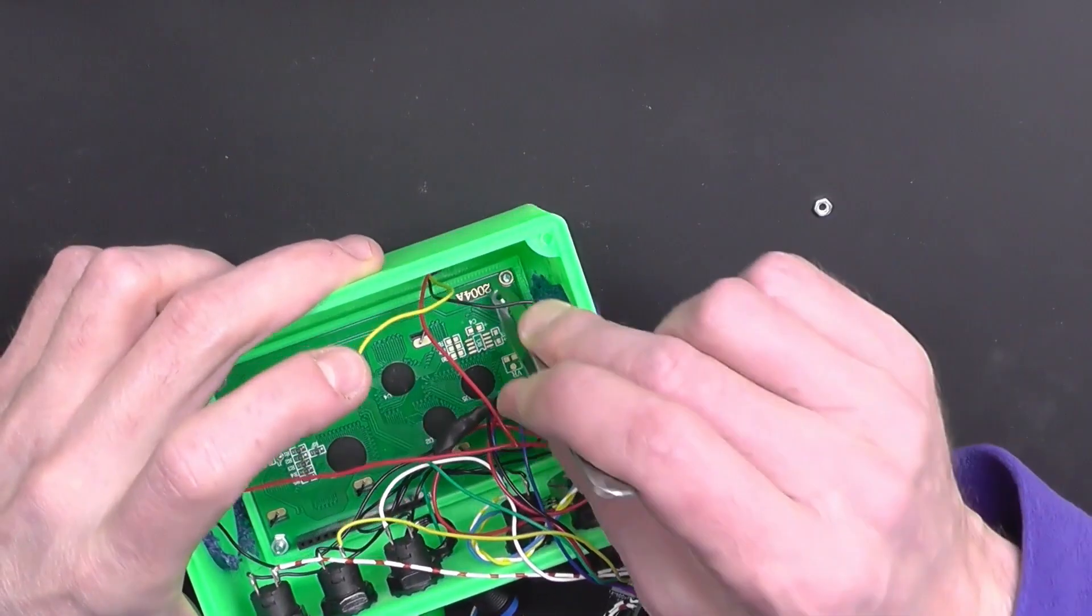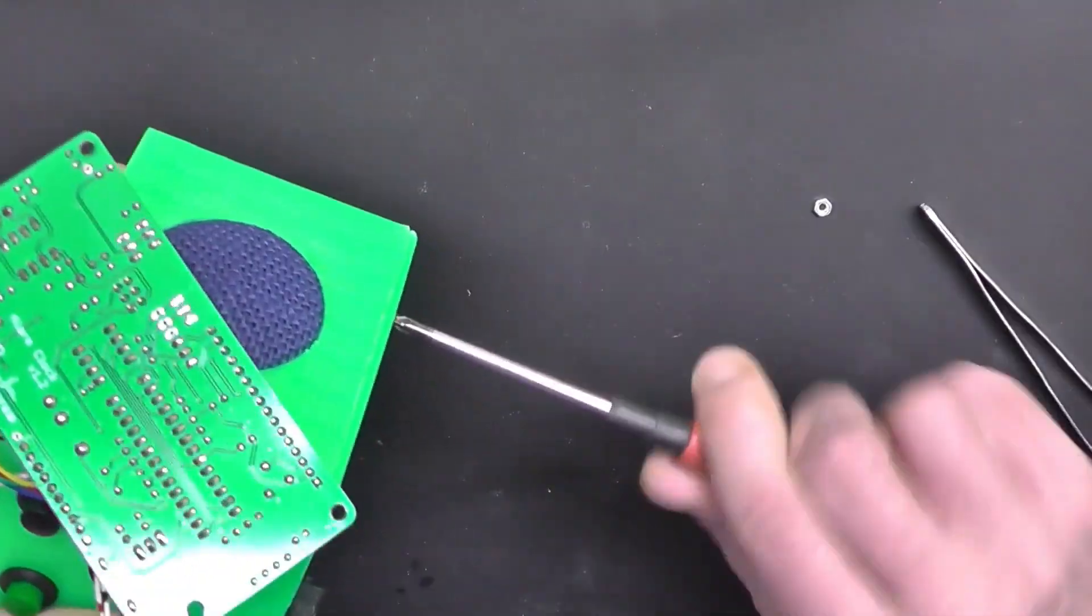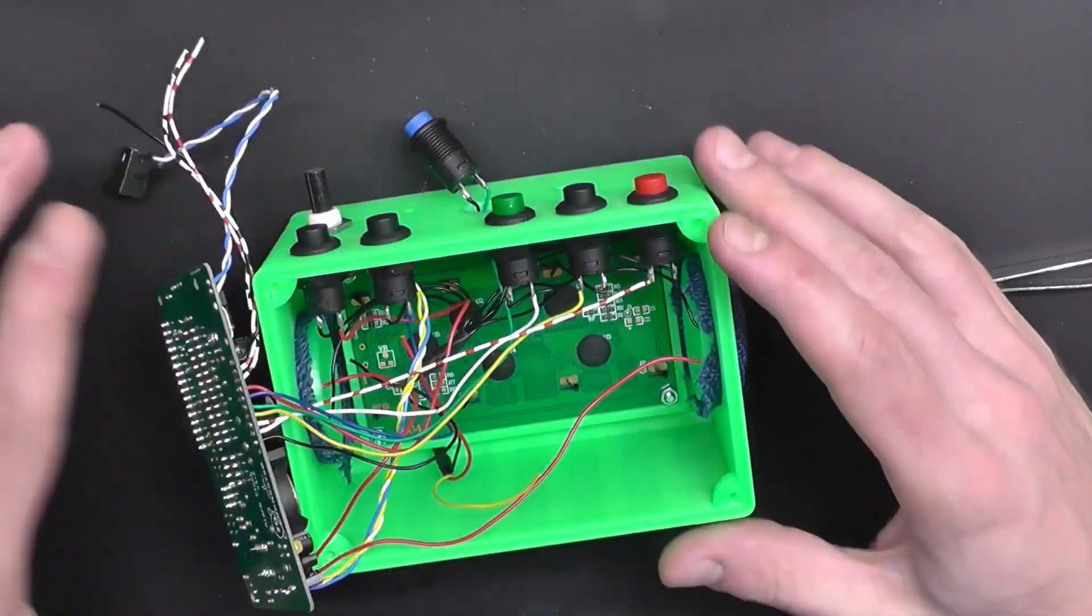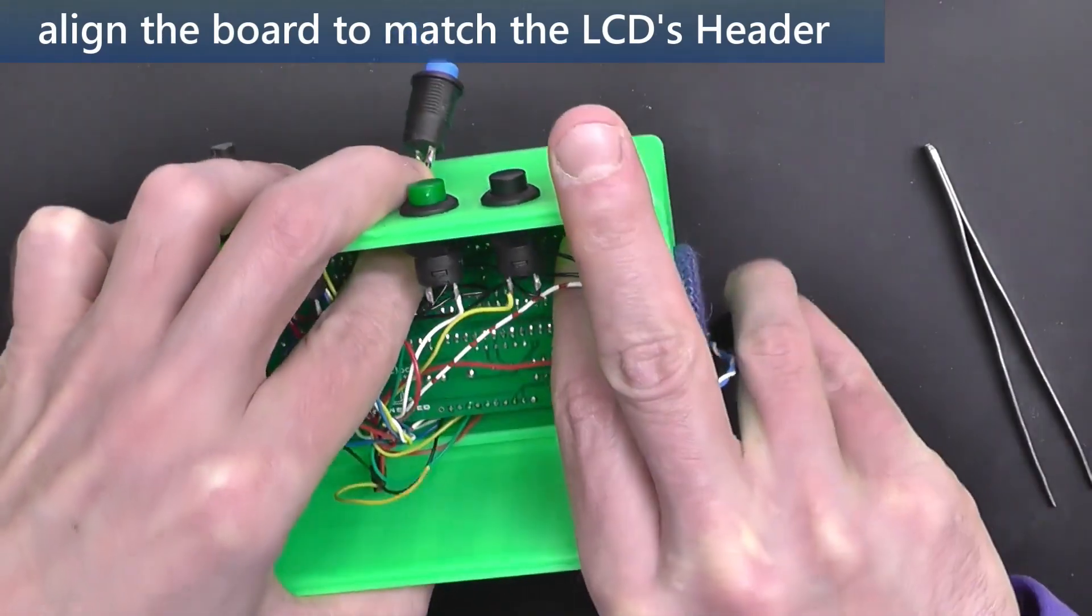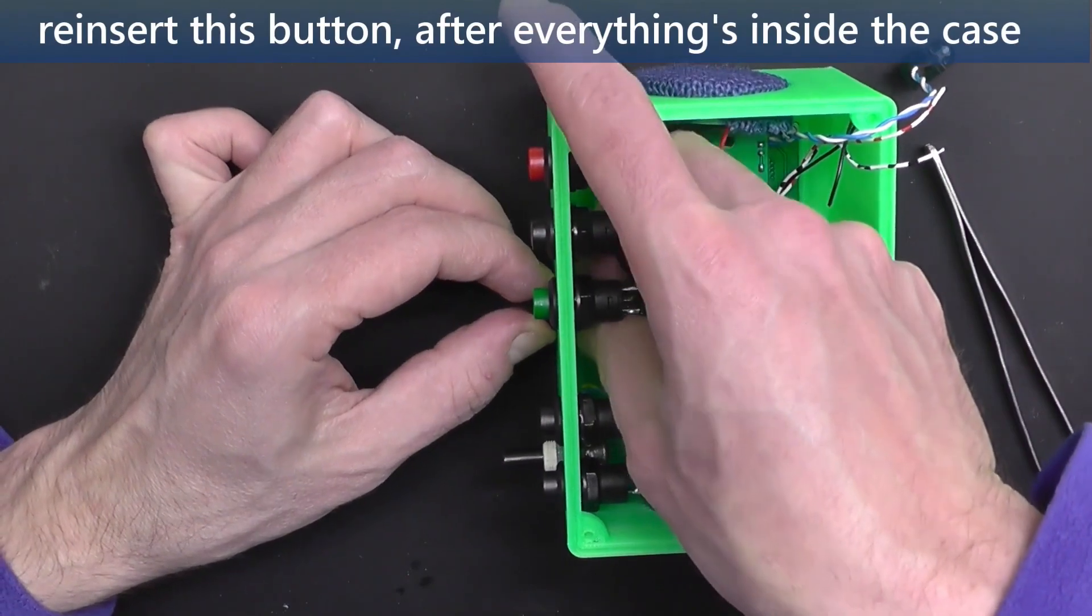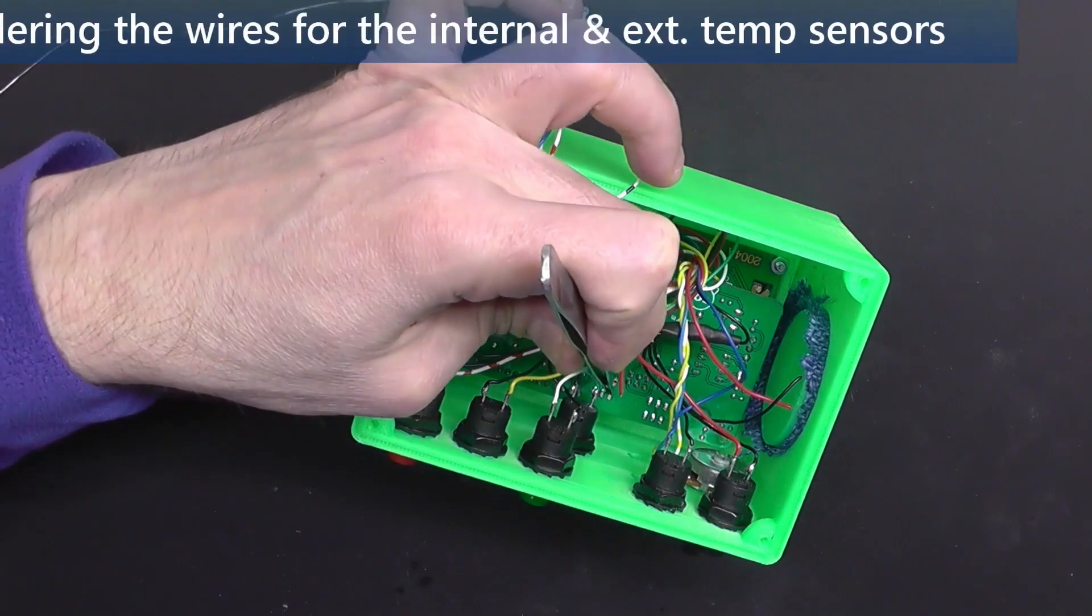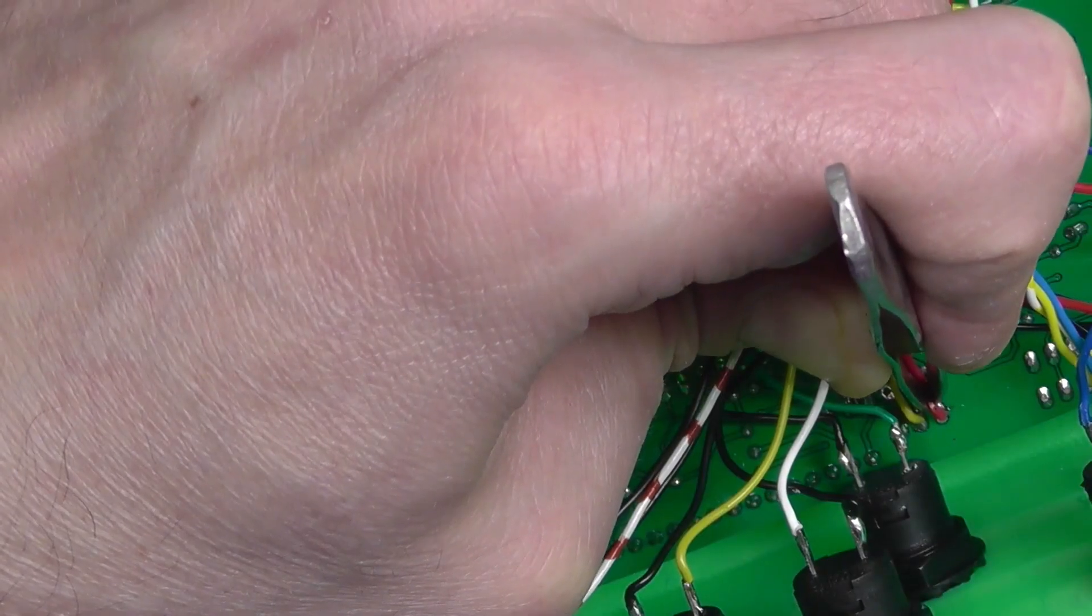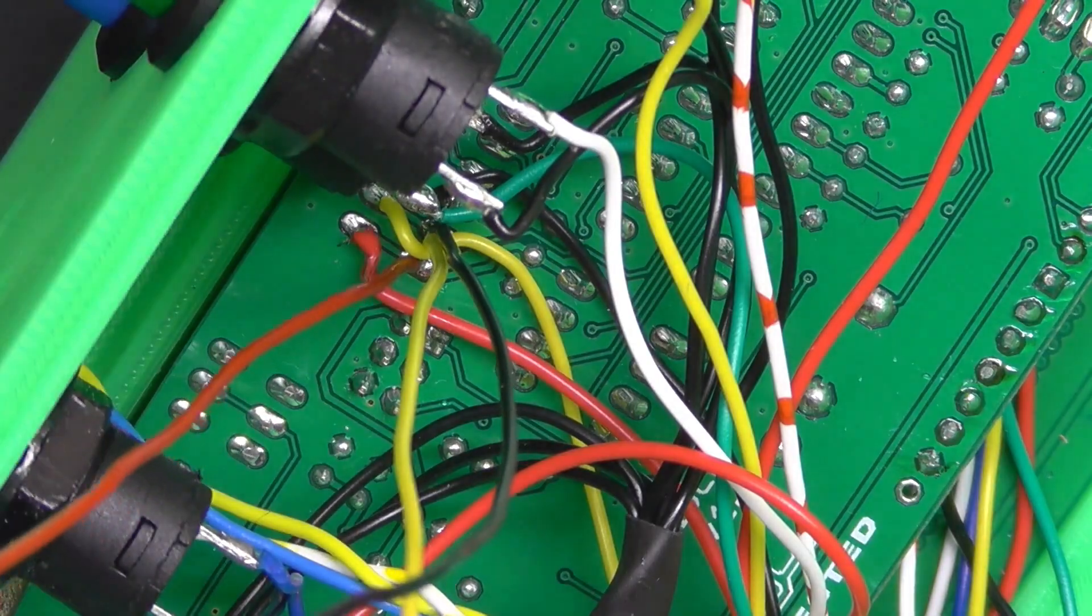And then we're going to gently place the whole thing inside the case. Another thing you can do now is to trim these wires if they're too long. You can then resolder them, just don't cut them too short in case you'll have to reopen and disassemble everything.